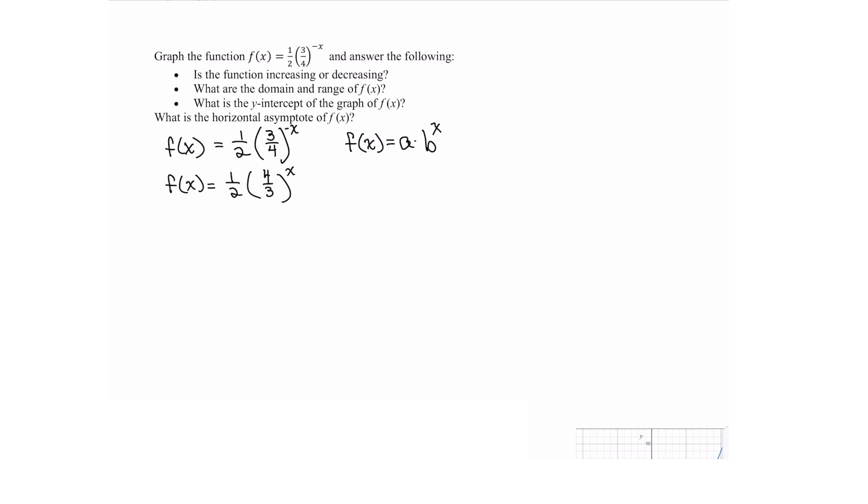Now that I've written it in that form, recall that if your base is greater than 1, the function, excuse me, so if the base is greater than 1 and your coefficient a is greater than 0 then the exponential function is increasing. So we have that our base four-thirds is greater than 1, our coefficient a is one-half and that's greater than 0 so our exponential function is increasing.